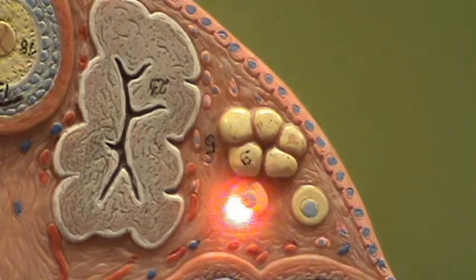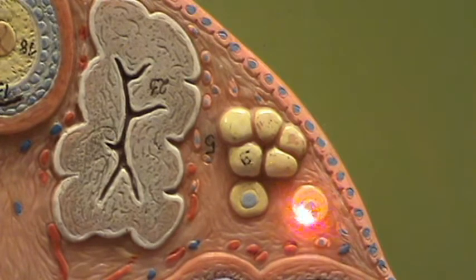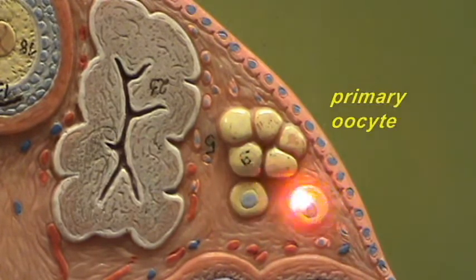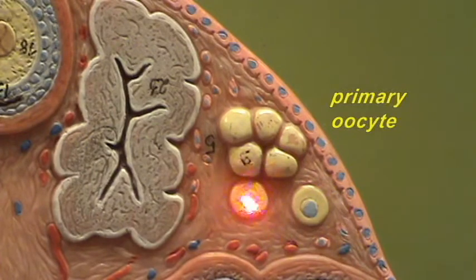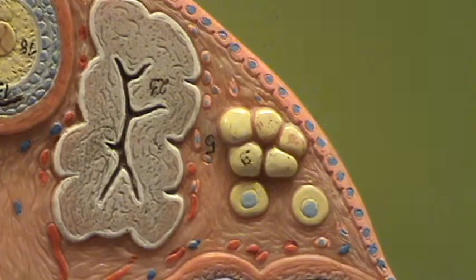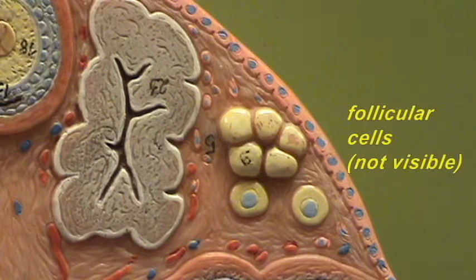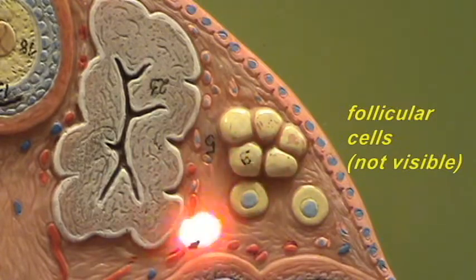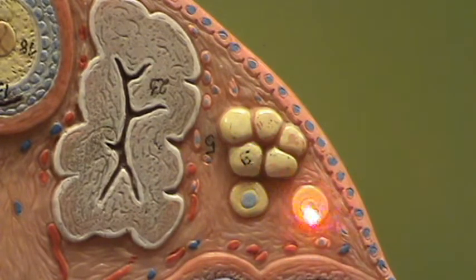These cells are primary oocytes. You can see the blue nucleus of these cells and the yellow cytoplasm. These primary oocytes are relatively small and they're surrounded by simple squamous cells called follicular cells. In this model there is no attempt made to show these follicular cells, so you only really see the primary oocytes.